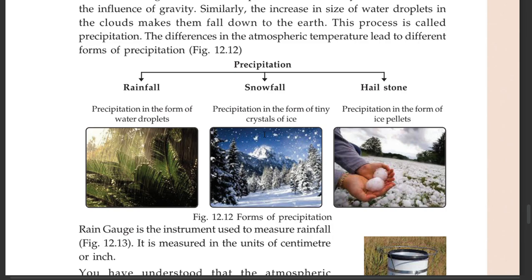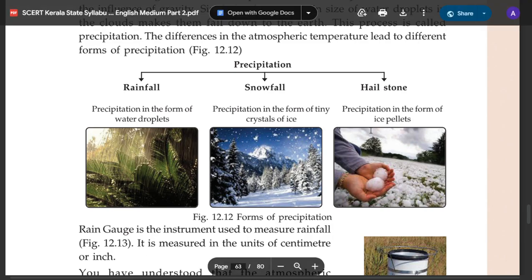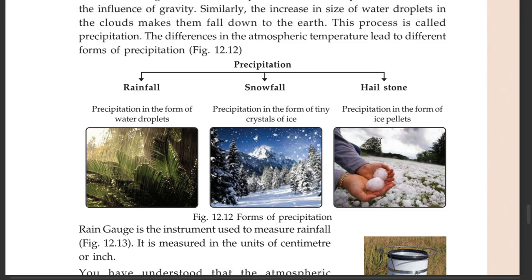Precipitation in the form of tiny crystals of ice is called snowfall. Precipitation in the form of ice pellets is hailstone.